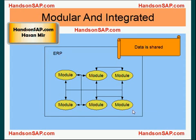ERP is a modular and integrated product. ERP software has multiple modules designed for different departments, and these modules are integrated in terms of data sharing — they share the same backend data source, the database. Transactions are automatically created in one module based on activity going on in another module.